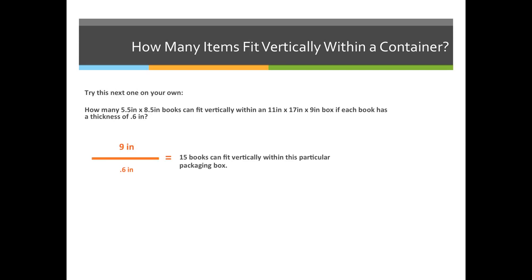First we recognize that the height of the box is 9 inches, then we divide it by the thickness of one book, which is 0.6. So 9 divided by 0.6 equals 15 books can fit vertically within this packaging box.